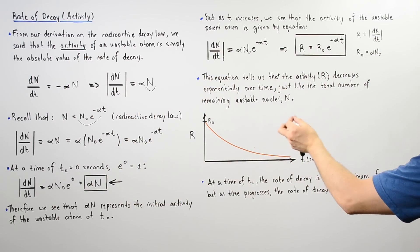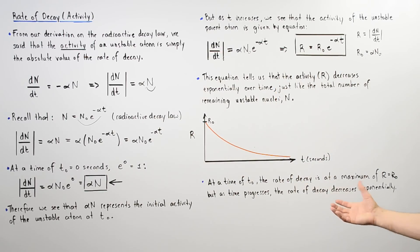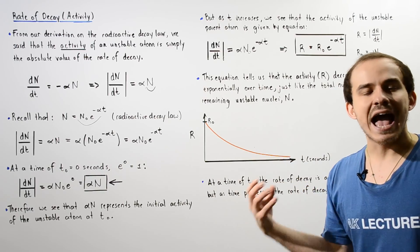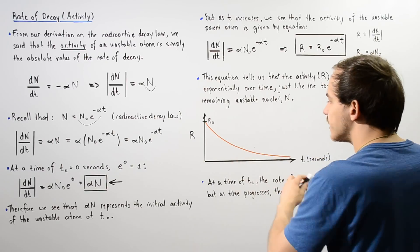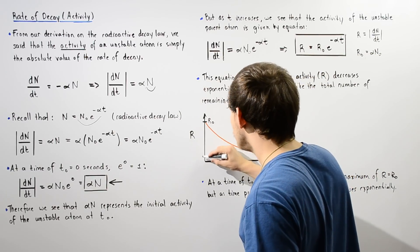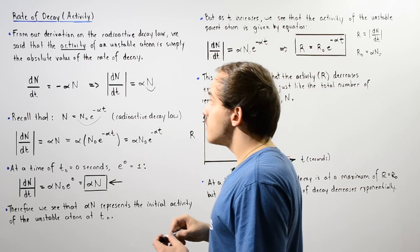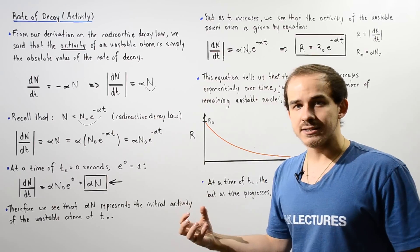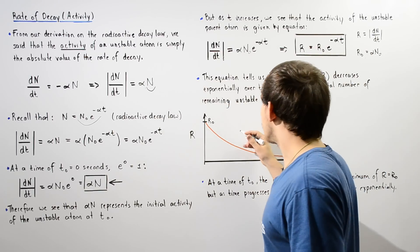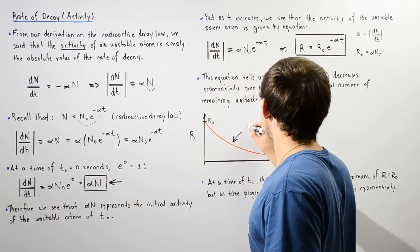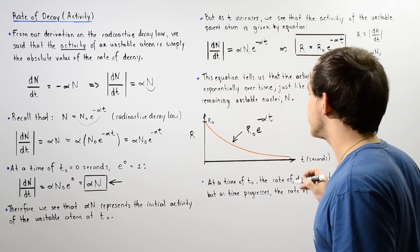At a time t-initial of zero seconds, the rate of decay or the activity is at a maximum amount given by r equals r-naught. As time increases, the rate of decay decreases exponentially as given by this curve, which represents r-naught multiplied by e to the negative alpha times t.